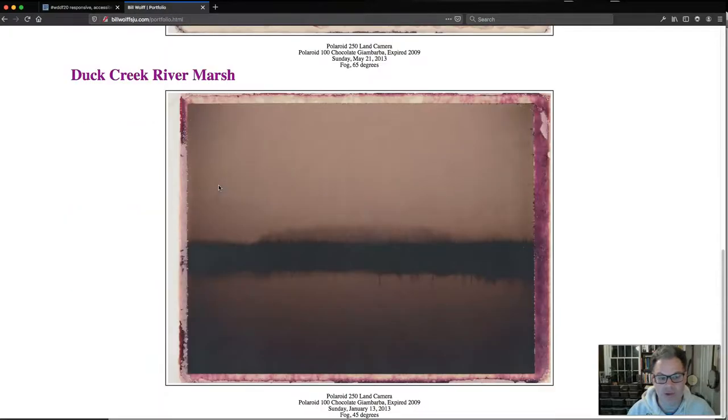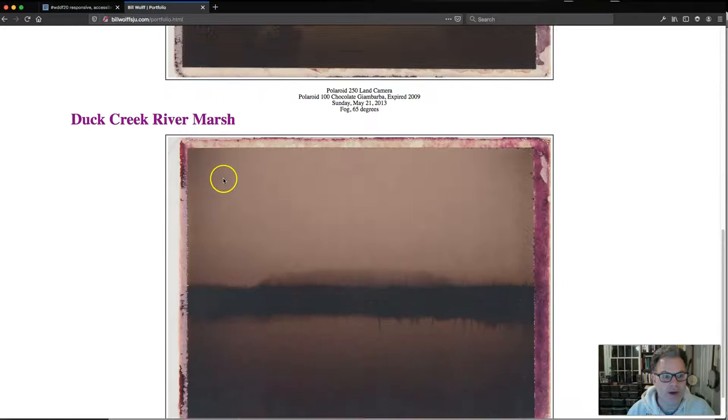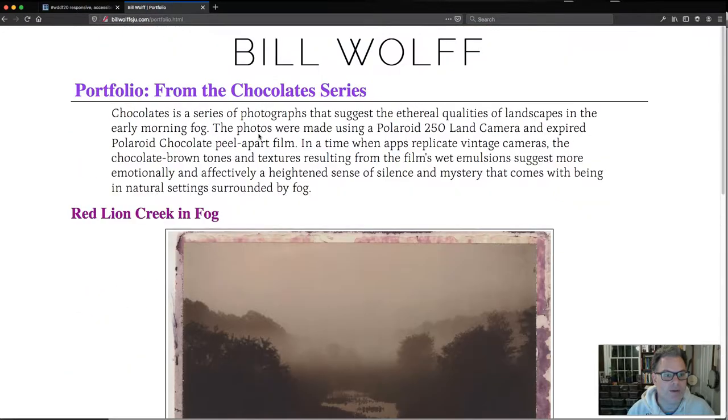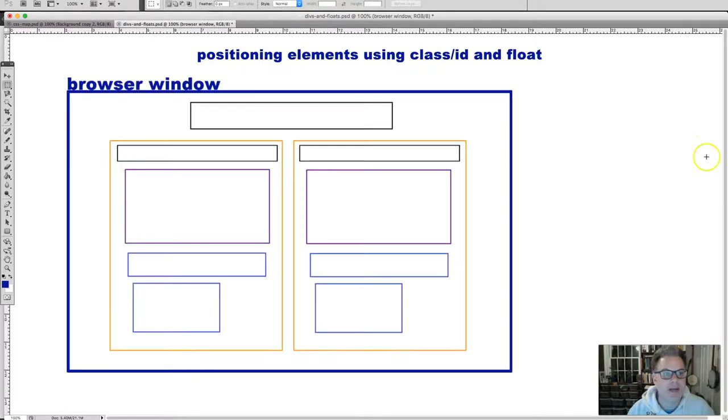Right now we have our portfolio items on our page, but they are pretty much one on top of the other. Some of you have more than two at this moment, but those of you with two it's perfectly fine. But what we'd like them to appear is side-by-side. And by side-by-side I mean something that looks a little bit like this. And the dark blue is the browser window.